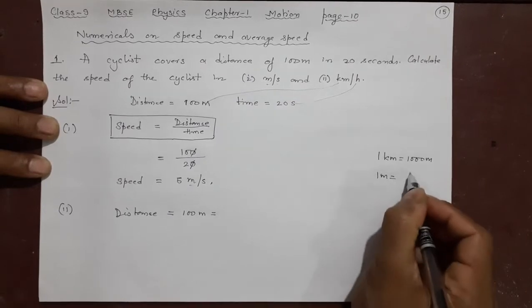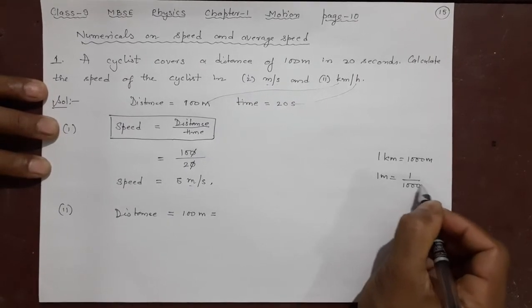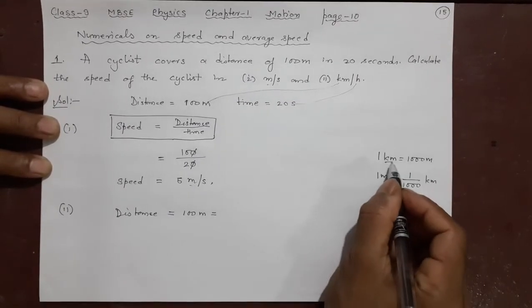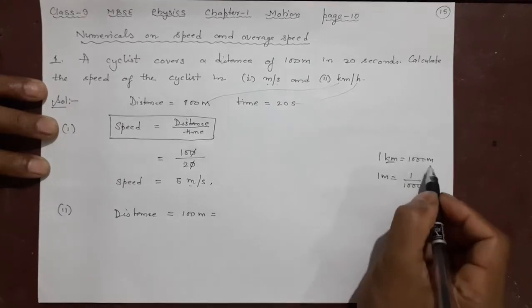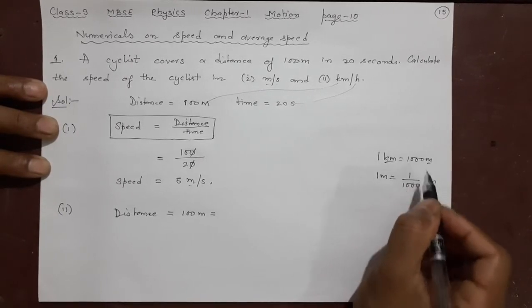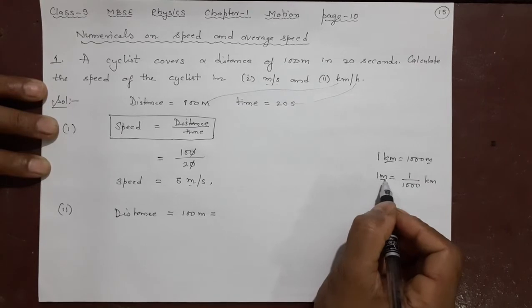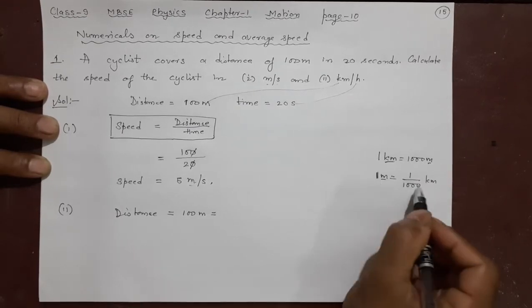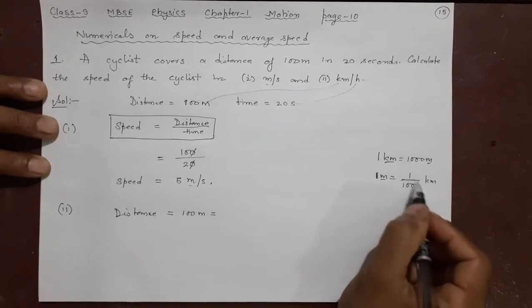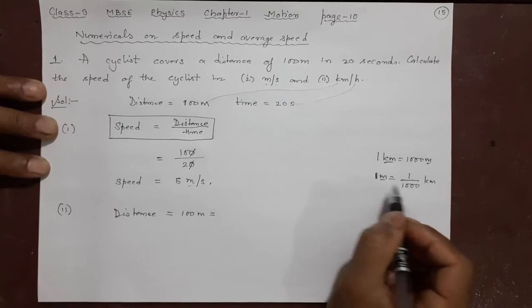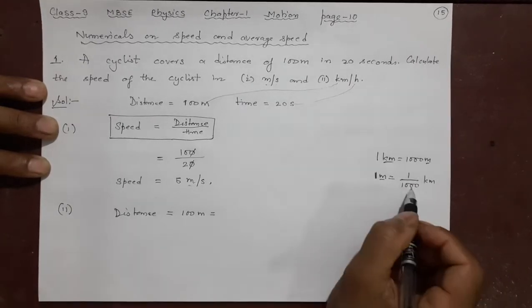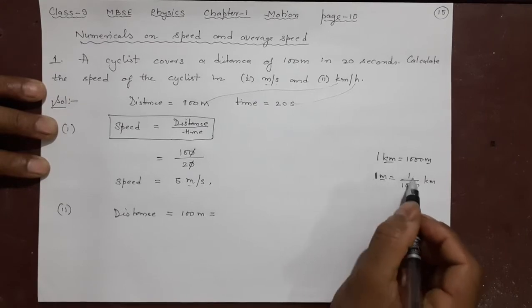So 1 meter will be 1 by 1000 kilometer. Big unit, small number. Small unit, big number. This is big unit, very small number. 1 by 1000 is very small compared to 1. So this is the conversion factor: 1 meter is 1 by 1000 kilometer.